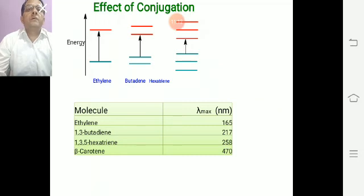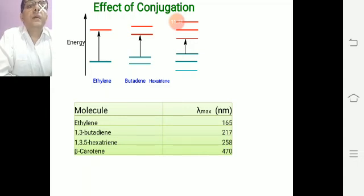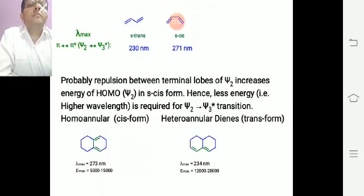Here is the effect of conjugation. When conjugation is more, the λ_max is more. For example, in ethylene the energy gap is large, so it absorbs at a shorter wavelength of 165 nm. In 1,3-butadiene the energy gap is somewhat less, and λ_max goes up to 217 nm. In 1,3,5-hexatriene the energy gap is smaller still, and λ_max is 258 nm. In beta-carotene, where more double bonds are present, λ_max is 470 nm.